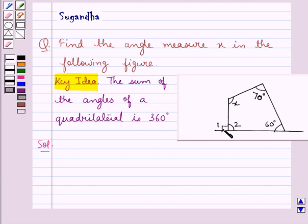Now in the figure I have marked this angle as 1 and this angle as 2. As you can see the angle 1 here is shown as 90 degrees and angle 1 and angle 2 they form a linear pair.